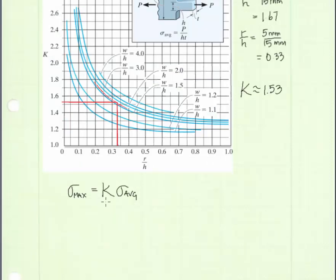To complete this problem, we will use the following equation: sigma max equals K times sigma average. Sigma average is given in the chart in this expression here. It is equal to P over HT.